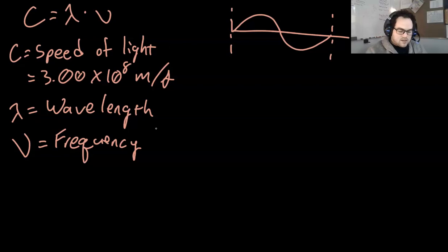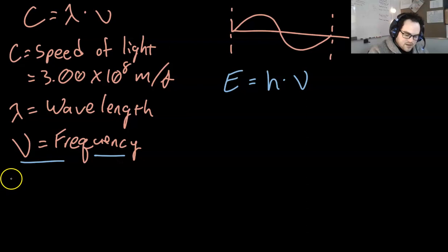Then you have the energy equation. Let's change colors for that. E equals Planck's constant, or H, times nu. Now, you already know that nu is frequency, so we don't have to talk about that again. But E is the energy, and that's measured in joules.